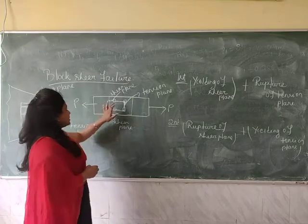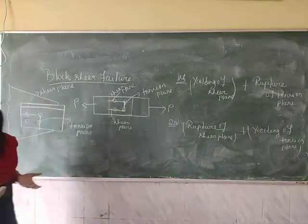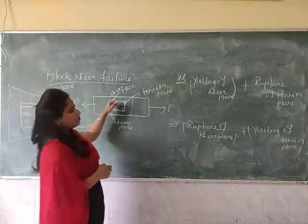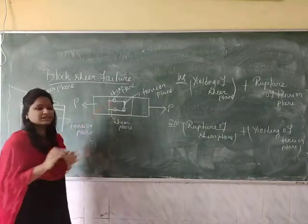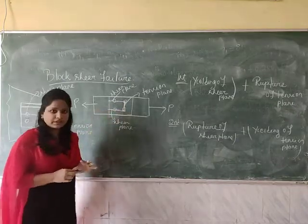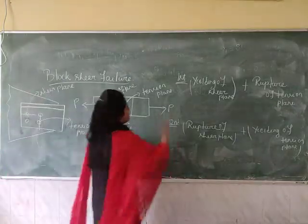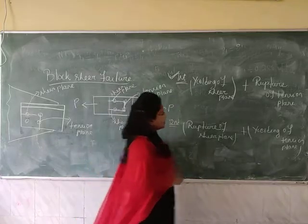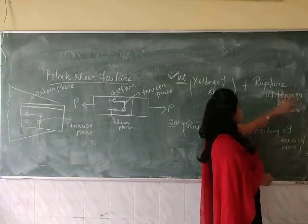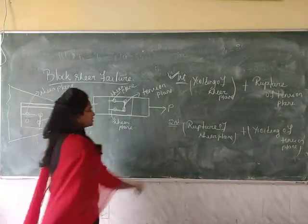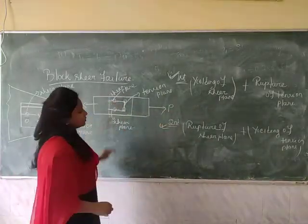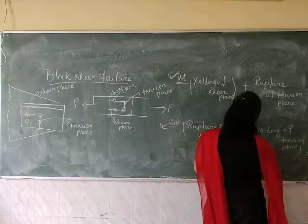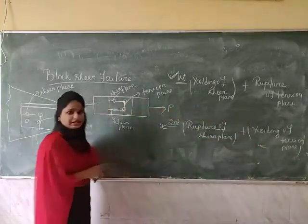The second combination is: rupture of the shear plane plus yielding of the tension plane. Since two phenomena are happening — shear and rupture — the shear plane may undergo yielding or rupture, and the tension plane may also undergo rupture or yielding. If one plane is reaching the yield stress, then the other plane reaches the ultimate stress.